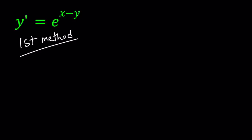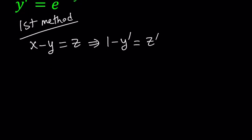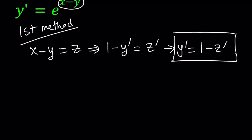Substitution is a really good method. So let's go ahead and call x minus y, z. And z is going to be a function of x because y is a function of x. So from here if you differentiate both sides we get 1 minus y prime, which is dy over dx, equals z prime, which is dz over dx. So now we can solve for y prime, and that gives us y prime equals 1 minus z prime.